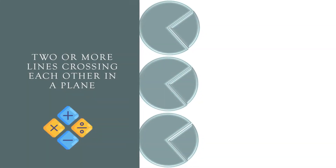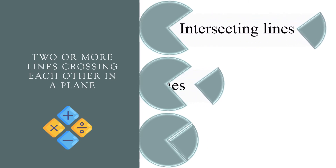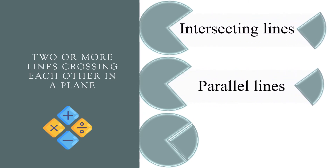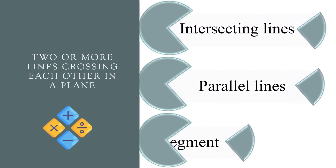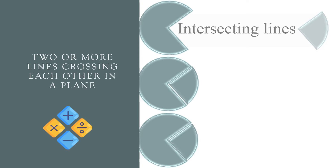Two or more lines crossing each other in a plane. Intersecting lines, parallel lines, or line segment? The correct answer is intersecting lines.